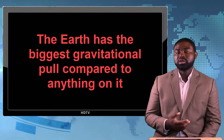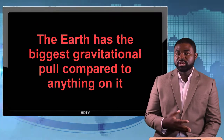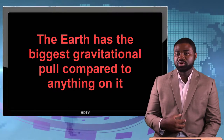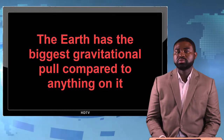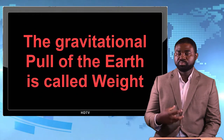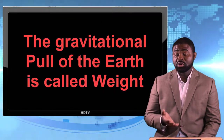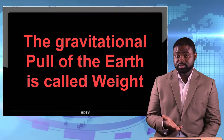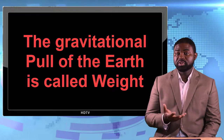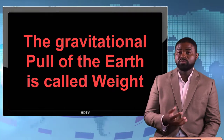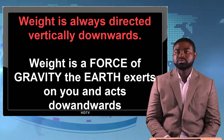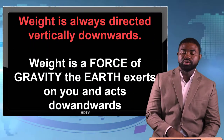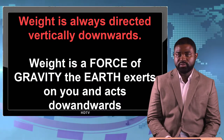That explains why the earth, which is the biggest object with respect to ours, has the biggest gravitational pull. And the gravitational pull of the earth is called weight. The gravitational pull of the earth is always directed downwards — always directed downwards. We call that weight.